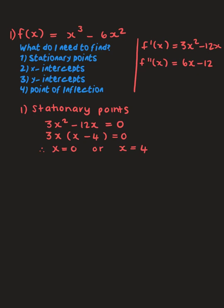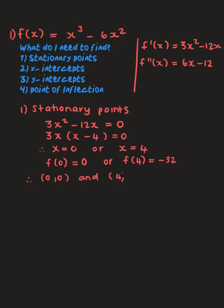Substituting x = 0 back into the original equation gives y = 0. Substituting x = 4: 4³ - 6(4²) = 64 - 96 = -32. So the stationary points are (0, 0) and (4, -32).